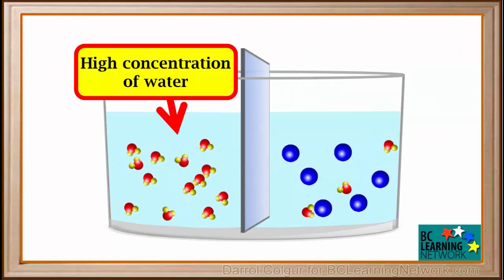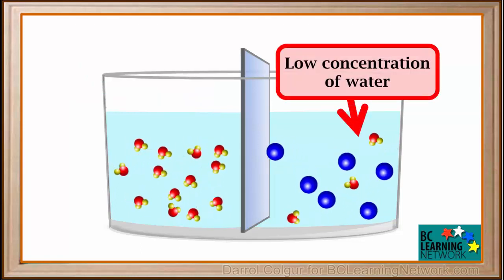Let's focus on just the water. Notice there's a high concentration of water on the left side of the barrier, with 13 water molecules shown. But on the right side, the concentration of water is low. There are only three water molecules shown. The rest of the space is taken up by the sugar molecules.